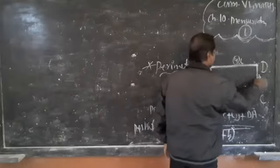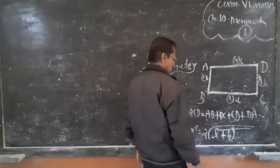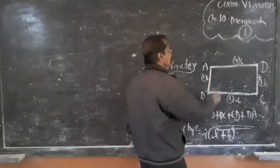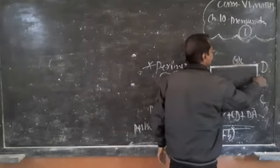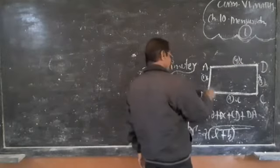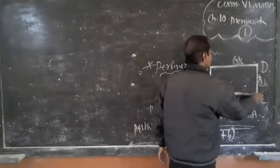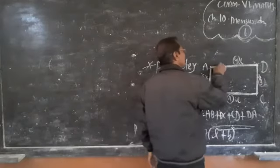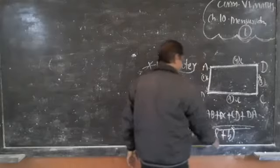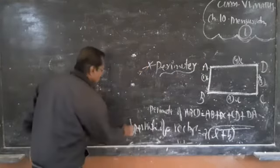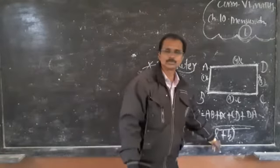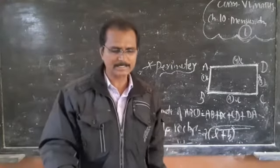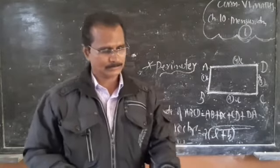Because the two lengths are equal and the two breadths are equal, we add one length and one breadth, then multiply by two. So the perimeter of the rectangle equals 2 into (L + B). Remember this formula: perimeter of rectangle = 2(L + B).